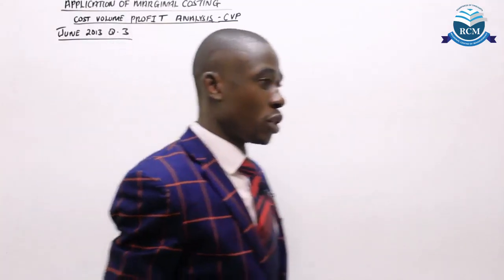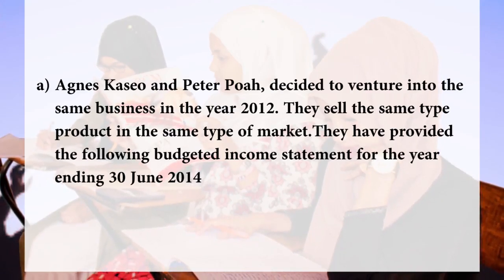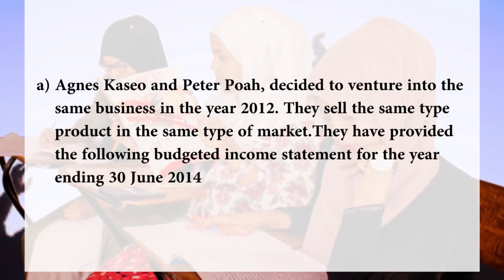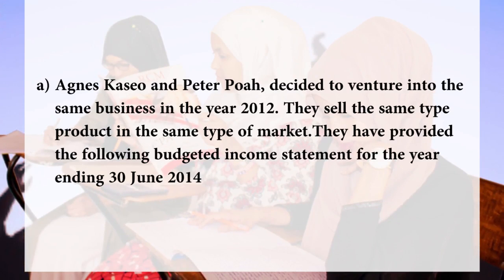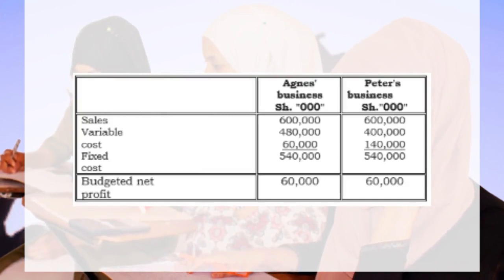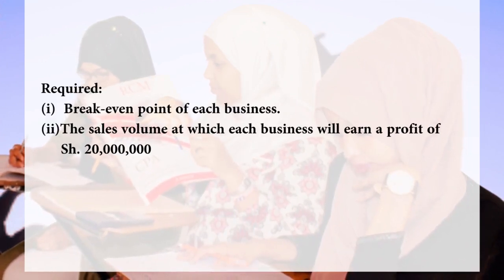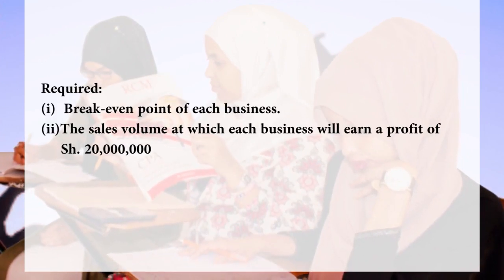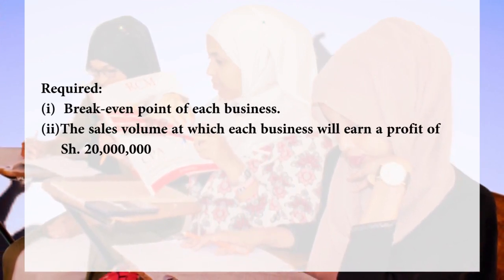The concept is still break-even point, but you are given a different perspective. In that question, we are told that Agnes, Casco, and Peter Poha decided to venture into the same business in the year 2012. They sell the same type of product in the same market. We are given the following budgeted income statement for the year ending 30 June 2014 — Agnes's business and Peter's business — with components of sales, variable costs, and fixed costs. The examiner wants you to determine: one, the break-even point of each business, and two, the sales volume at which each business will earn a profit of 20 million. Remember, the moment you've seen this question, you shouldn't be afraid.